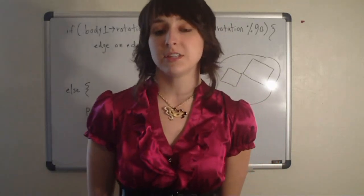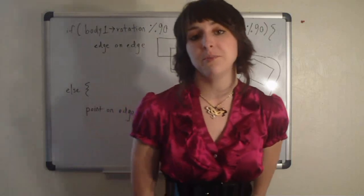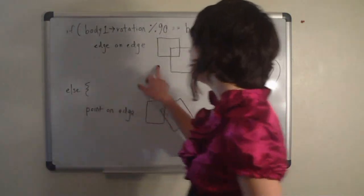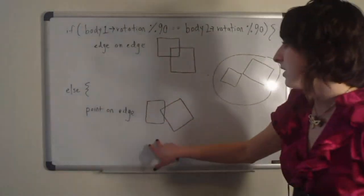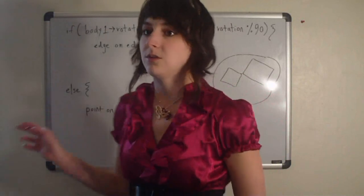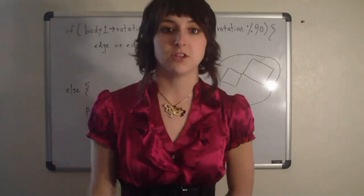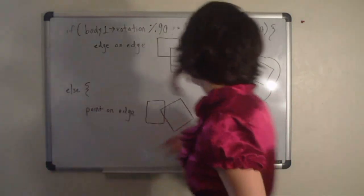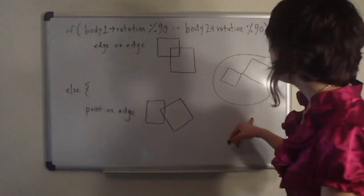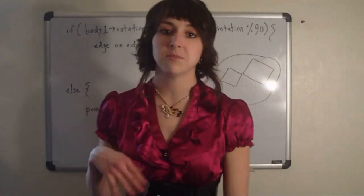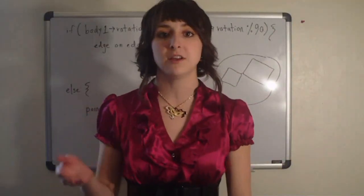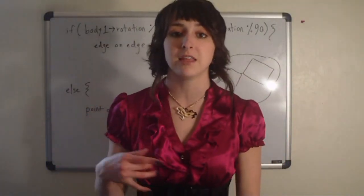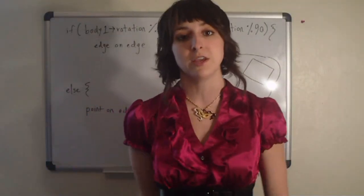Since there are two realistic scenarios in which two bodies can collide — edge on edge or point on edge — we first have to determine which of the two is the case. A third scenario, point on point, is so unlikely to occur that we simply let this kind of collision slide a frame until we can calculate it as one of the other two cases.